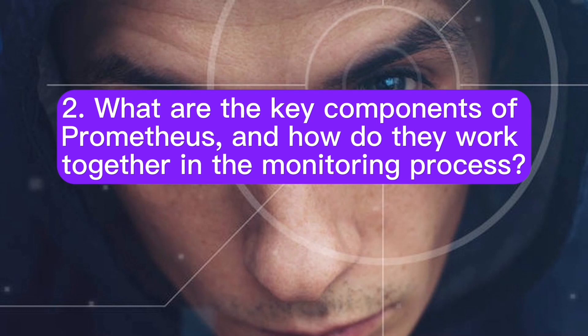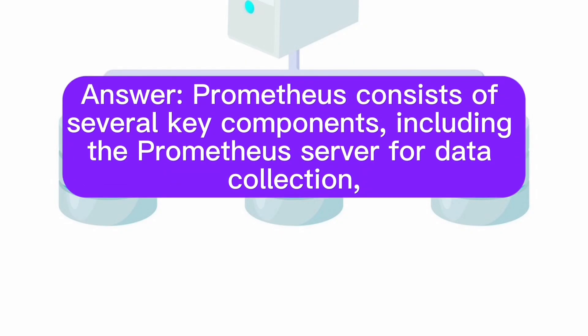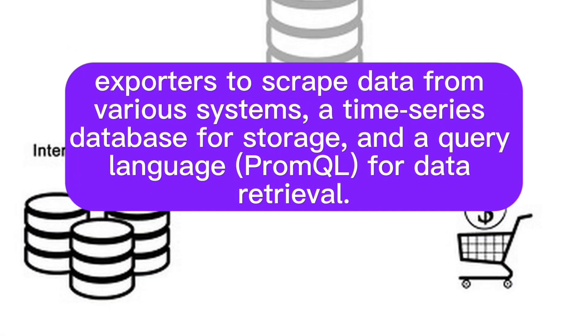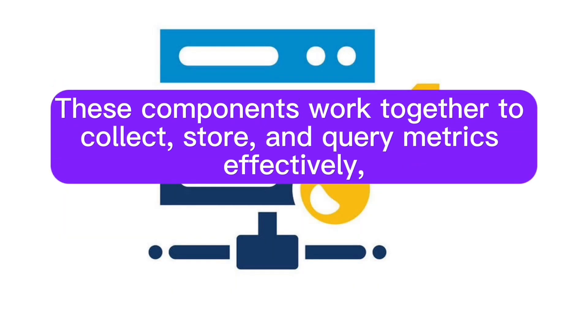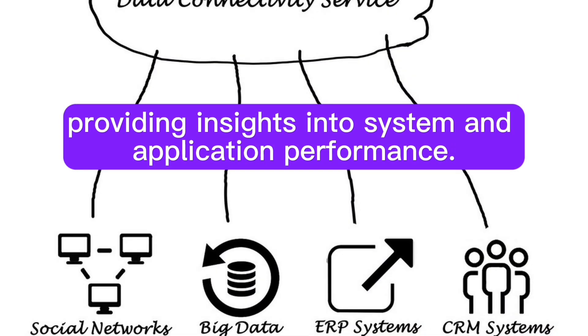What are the key components of Prometheus, and how do they work together in the monitoring process? Prometheus consists of several key components, including the Prometheus server for data collection, exporters to scrape data from various systems, a time-series database for storage, and a query language PromQL for data retrieval. These components work together to collect, store, and query metrics effectively, providing insights into system and application performance.